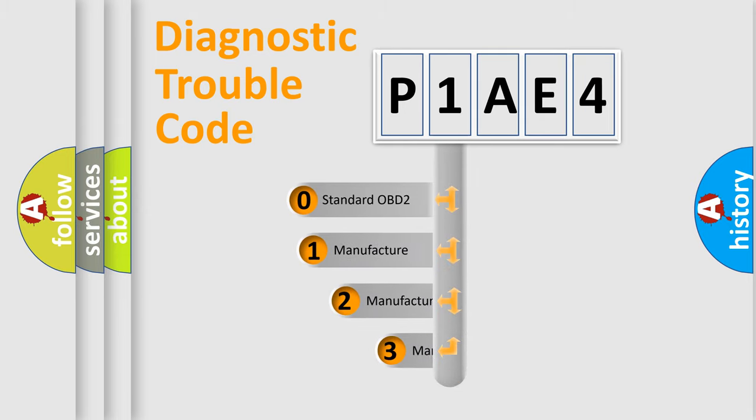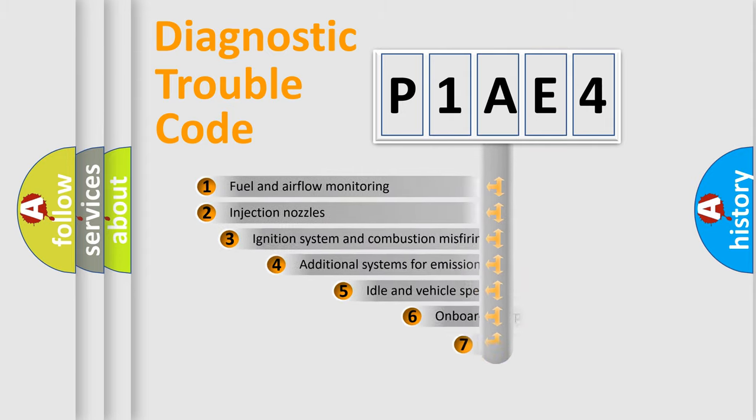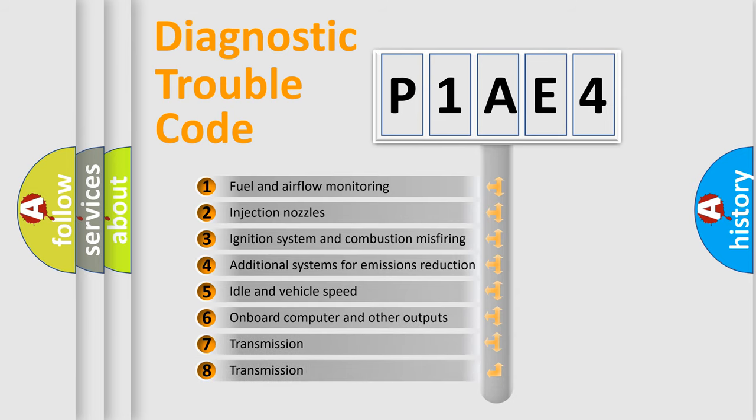If the second character is expressed as zero, it is a standardized error. In the case of numbers 1, 2, 3, it is a car-specific error. The third character specifies a subset of errors.